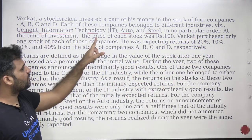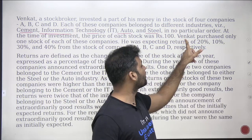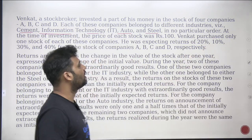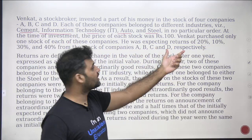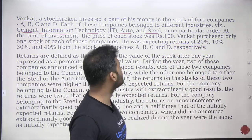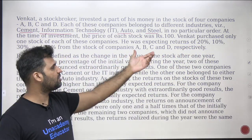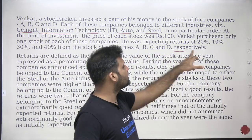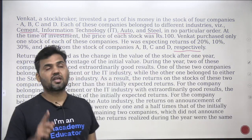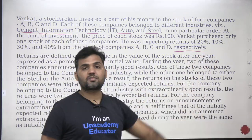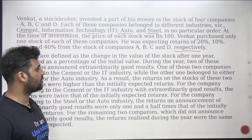At the time of investment, the price of each stock was ₹100 — a very basic piece of information to keep in mind. Venket purchased only one stock of each of these companies. He was expecting returns of 20%, 10%, 30%, and 40% respectively from the stocks of companies A, B, C, and D.